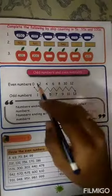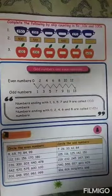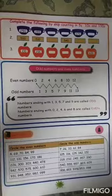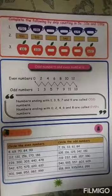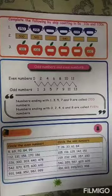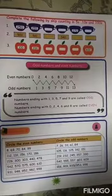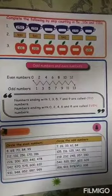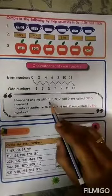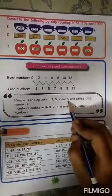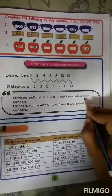Now coming to odd and even numbers. Whatever number it may be — two digit, three digit, four digit — you have to check the last digit, that is in ones place or units place. Numbers ending with one, three, five, seven and nine are odd numbers.